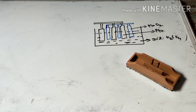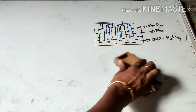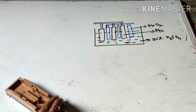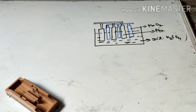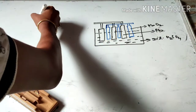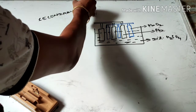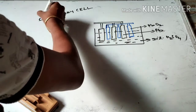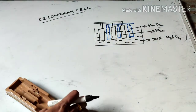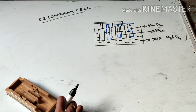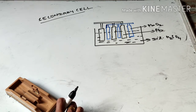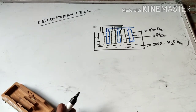Dear students, today I will go for the next part of electrochemistry, that is the secondary cell. The meaning of secondary cell is a rechargeable cell — those types of cells can be used again and again by recharging. They have both functions: they can act as both electrochemical as well as electrolytic cells.